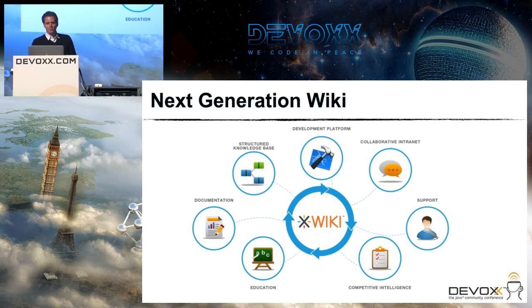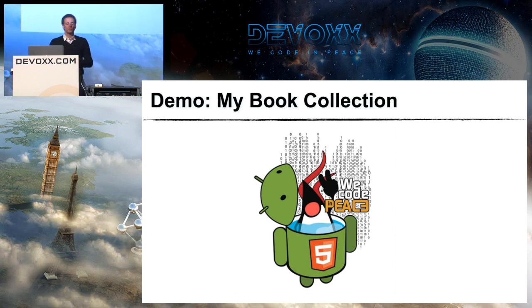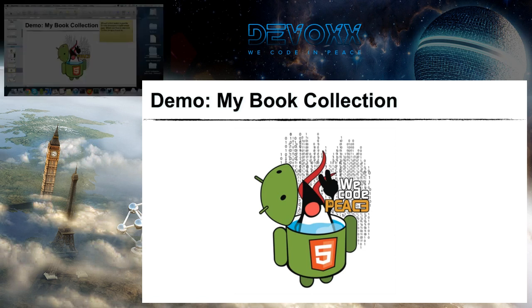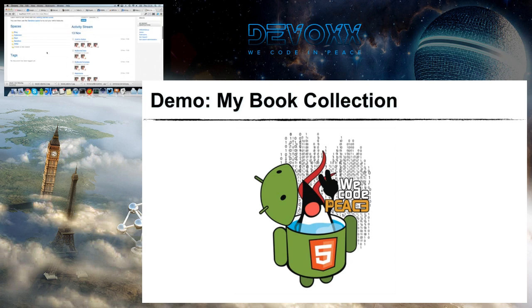I'm going to dive directly into a demo. We're going to demo a very simple application for handling a book collection — not only the ability to have your book collection inside your wiki, but also the ability for people to borrow some books from your collection and to track that in your wiki. So here you see xWiki. If you download it, this is what you will get: the homepage with some text, a dashboard, an activity stream, and so on.